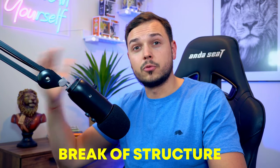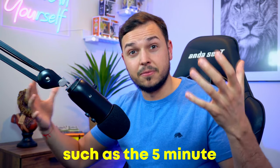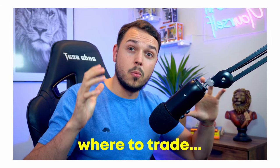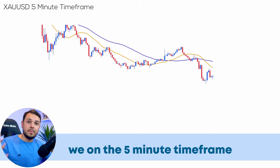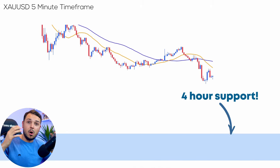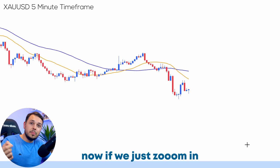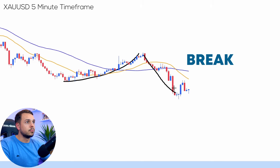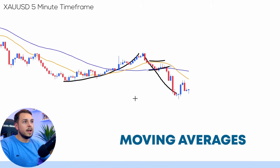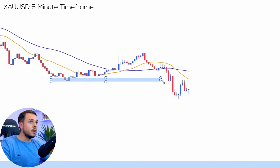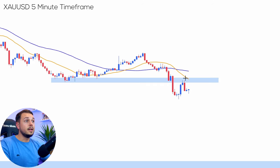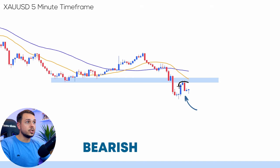A super important break of structure means the lower time frame — the five-minute, where we want to enter — should have a clear direction. On the five-minute time frame we can see the four-hour support marked in blue. Zooming in, there's a clear structure break, a nice push towards the downside, and a break of the two moving averages. We can use the rectangle tool to mark where the previous area of support and resistance was, which lines up near the 20 and 50 moving averages.